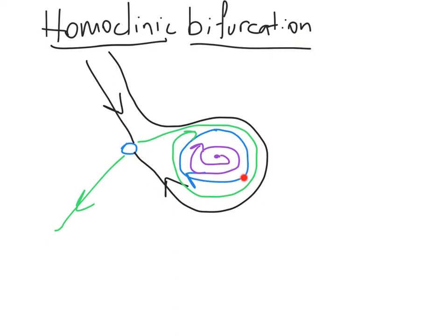So right now, this is a normal limit cycle. We go around it in a finite amount of time. But there's going to be a moment during the bifurcation where it basically becomes a homoclinic orbit and it's going to have an infinite period.